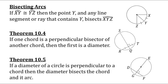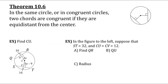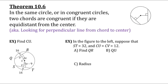Now let's talk about bisecting arcs. If arc XY is congruent to arc YZ, then point Y and any line segment or ray that contains Y bisects arc XYZ. Theorem 10.4: if one chord is a perpendicular bisector of another chord, then the first is a diameter. Use common sense about which one is the diameter. Theorem 10.5 is the reverse: if a diameter of a circle is perpendicular to a chord, then that diameter bisects the chord and its arc. Theorem 10.6: in the same circle or in congruent circles, two chords are congruent if they are equidistant from the center.